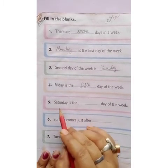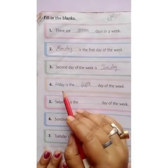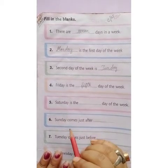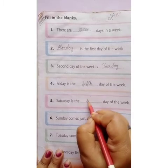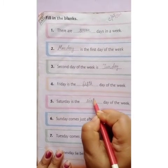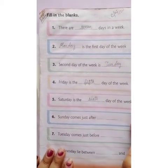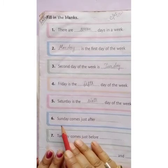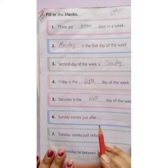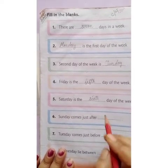Number five: Saturday is the dash day of the week. We know Friday is the fifth day, so Saturday is the sixth day — s-i-x-t-h, sixth. Saturday is the sixth day of the week. Number six: Sunday comes just after which day? Yes, it's Saturday — s-a-t-u-r-d-a-y, Saturday.